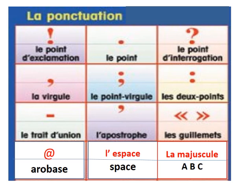La point — dot. La point d'interrogation — question mark. La virgule — comma. La point-virgule — semicolon. Les deux points — colon. Le trait d'union — hyphen. L'apostrophe — apostrophe. Les guillemets — quotation marks. Arrobas means at the rate of. L'espace — space. La majuscule — capital letters. These are the punctuation marks in French.